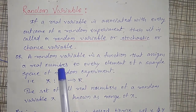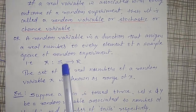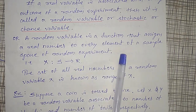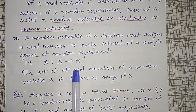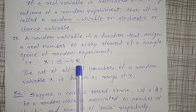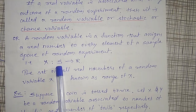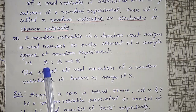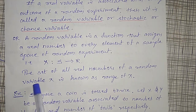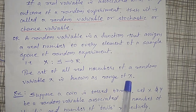Mathematically, a random variable is a function that assigns a real number to every element of the sample space of a random experiment. That is, X is a function from S to R, where S is the sample space, and X is the random variable giving one real number. The set of all real numbers of a random experiment X is known as the range of X.